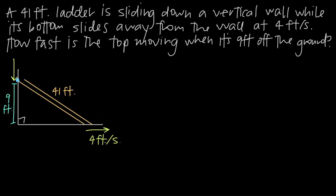As a reminder, we're going to use the Pythagorean theorem: a² + b² = c², where a and b are the lengths of the legs and c is the length of the hypotenuse. If we say this side is a and this side is b, then the hypotenuse must be c, and we can start to put together a picture of the moment that we're interested in.